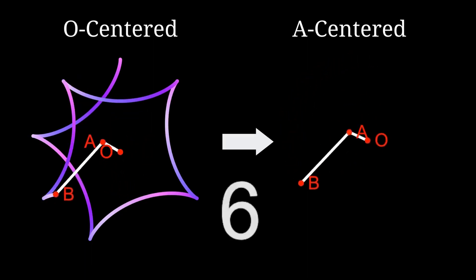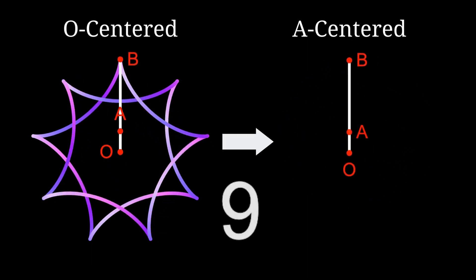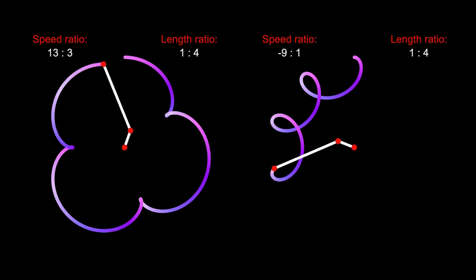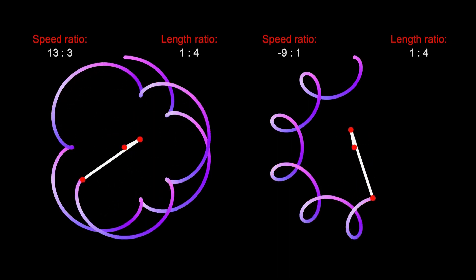Whether my explanation has been helpful or not, you can always rely on this formula. For example, if you want to create a tenfold pattern, you know how to set the speed ratio. 13 to 3, or negative 9 to 1 are just two of the options.